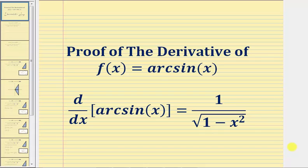Welcome to a proof of the derivative of f of x equals arc sine x. We'll prove that the derivative of arc sine x with respect to x equals one divided by the square root of the quantity one minus x squared.